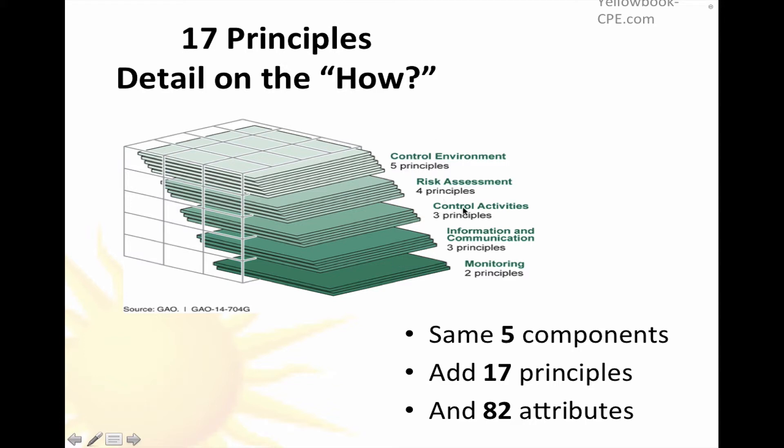Notice these are the five components on the FACE, and they broke it into 17 underlying principles. The Green Book is the same thing as the COSO model, but it was put out by the GAO.